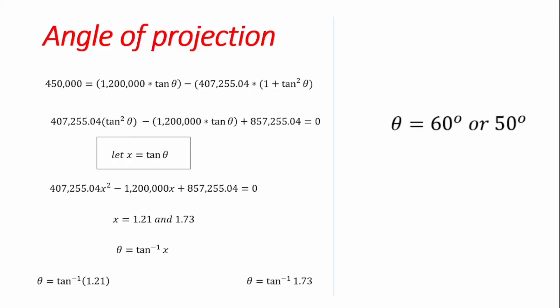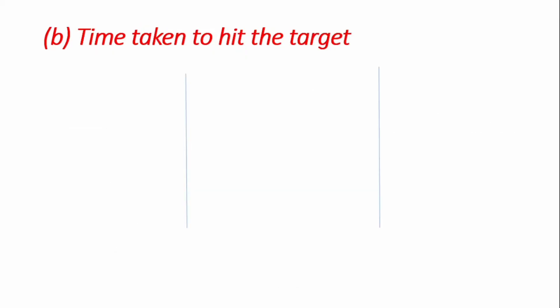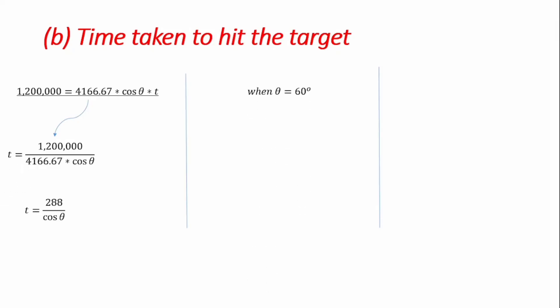The next question is to find the shortest possible time for the missile to hit the target. We try both angles by substituting them back into the time equation t = 288/cosθ. Using the horizontal displacement equation is easier. For θ = 60°: t = 288/cos60°.